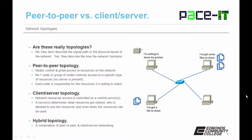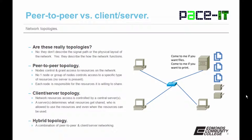In a peer-to-peer topology, the nodes control and grant access to resources on the network. No one node or group of nodes controls access to a single specific type of resource — there's no real server presence. Each node is responsible for the resources it's willing to share. In a client-server topology, network resource access is controlled by a central server or servers. A server determines what resources get shared, who is allowed to use those resources, and even when those resources can be used. In the small office or home office, it's common to find a hybrid topology — a combination of peer-to-peer and client-server networking.